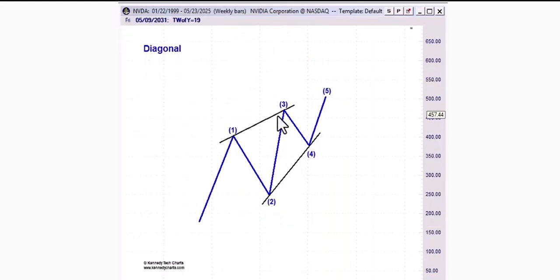Now remember, each move, each wave of an ending diagonal must subdivide into three waves, specifically a zigzag. And just to remind everybody, if you want a list of these rules and guidelines, there's no better book out there that I'm aware of other than Elliott Wave Principle, written by A.J. Frost and Robert Prechter. And if you go to chapter two, pages 86 through 91 in that book, what Robert Prechter did was he actually codified and gave you a list.